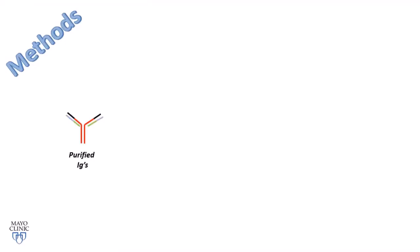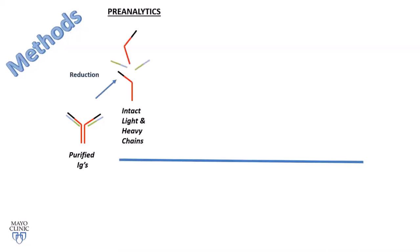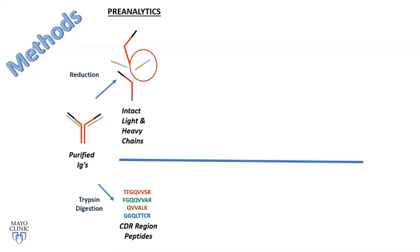All methods start by purifying immunoglobulins. Then we split into two approaches based on pre-analytical processing. In the first, we reduce immunoglobulins into heavy and light chains — the analytical target is the light chain. In the second, traditional proteomics: we digest with trypsin and look at the CDR peptides, which are unique and can be tracked.